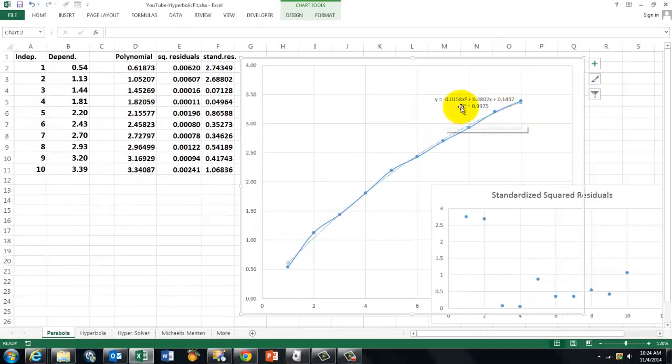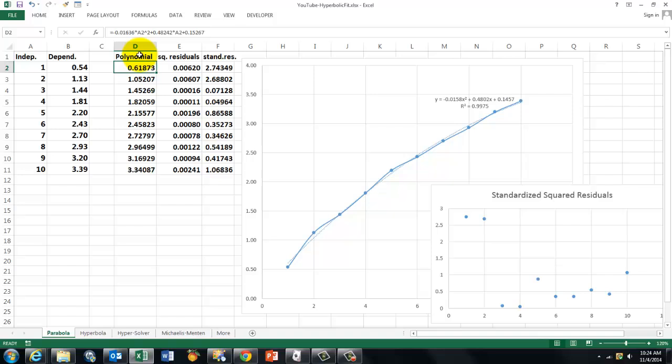Once you have that information, then you can use that for the calculation of the fitting curve. So I did that here. I multiplied the values times A2 plus 0.48 times A2 plus etc. Once you have that information, then you can calculate here what the curve would be. And the dotted line shows that value.